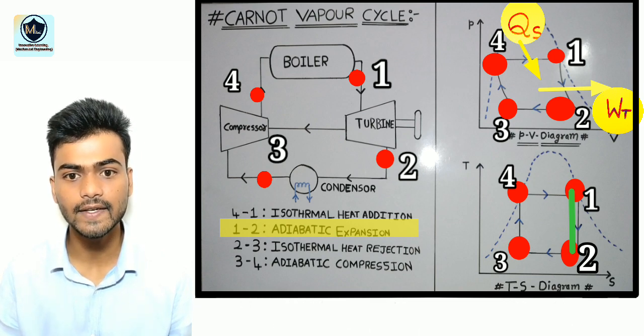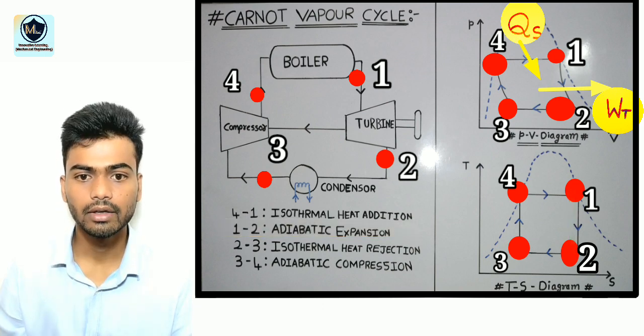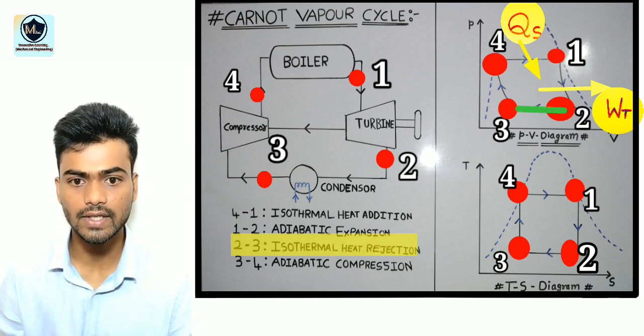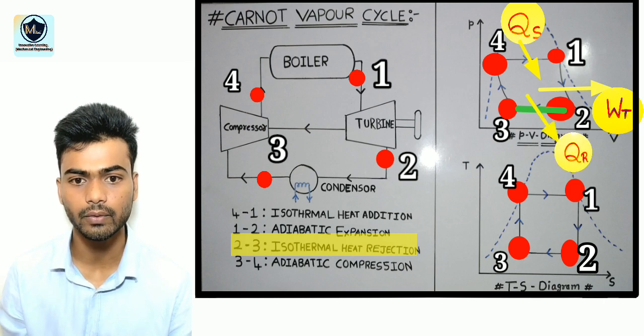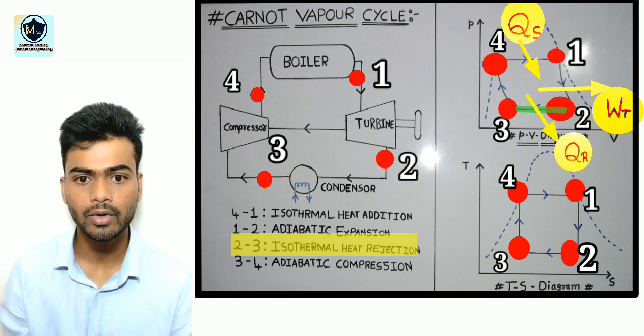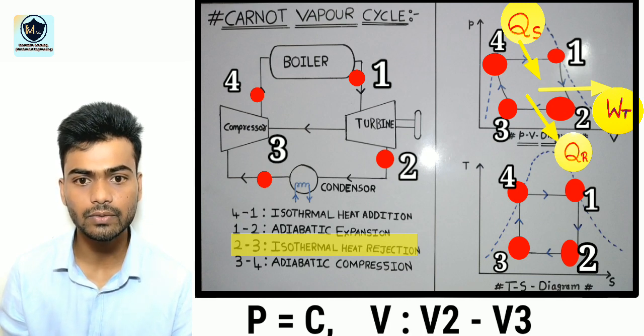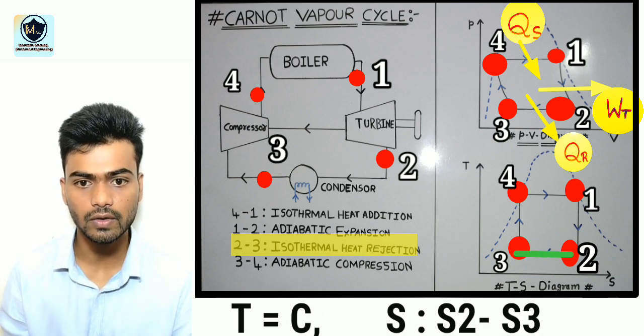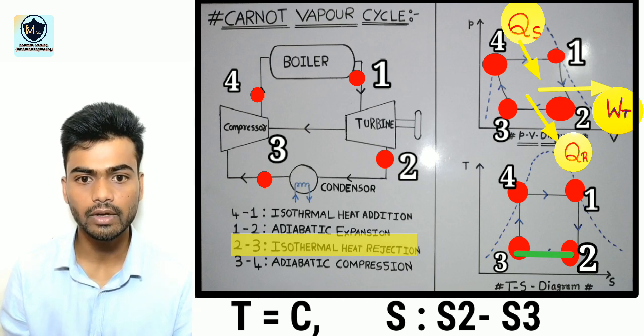In isothermal heat rejection process that is 2 to 3 exhausted steam loses its latent heat to the circulating water which is circulated through the condenser or we can say heat is rejected to the surroundings. In PV diagram pressure remains constant p2 is equals to p3 where volume decreases from v2 to v3. Moving on to the TS diagram temperature remains constant that is t2 is equals to t3 where entropy falls from s2 to s3.